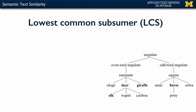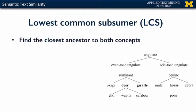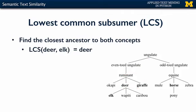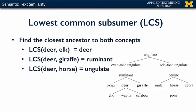Another way to find similarity is using the Lowest Common Subsumer (LCS) — the ancestor that is closest to both concepts. For example, deer and giraffe have the LCS of ruminant. Even though ungulate and even-toed ungulate are both ancestors, ruminant is the lowest one in the hierarchy. For deer and elk, the LCS is deer itself, because deer is the parent of elk. For deer and horse, the LCS goes all the way up to ungulate.